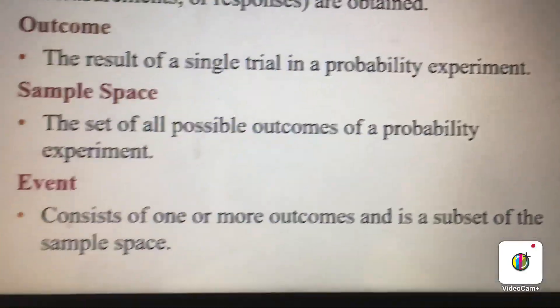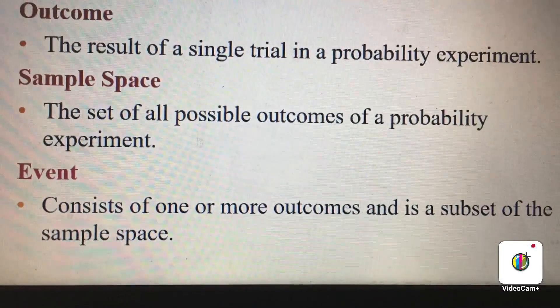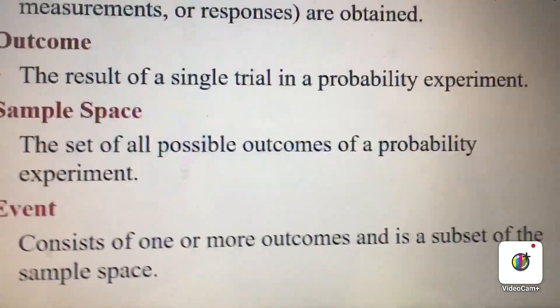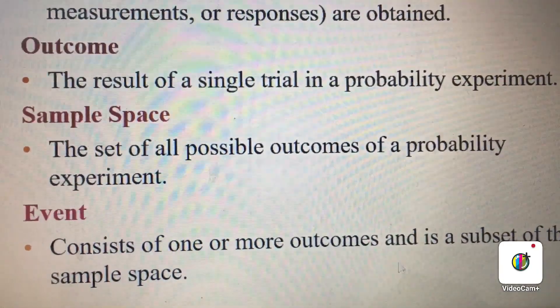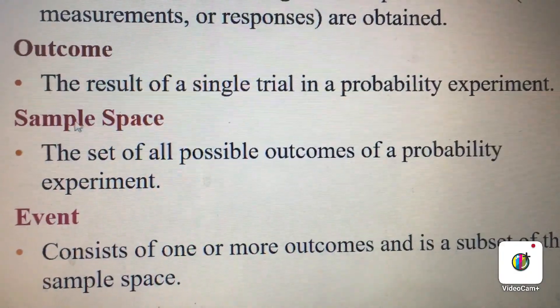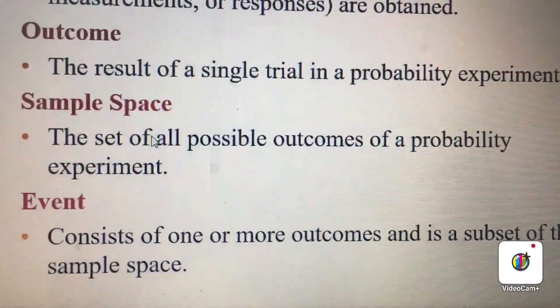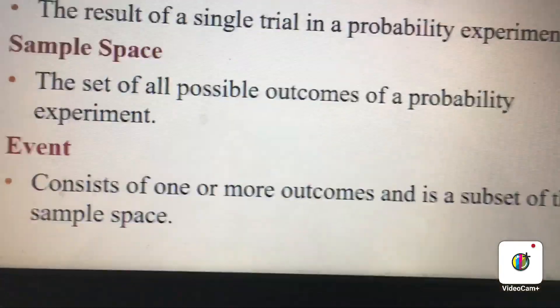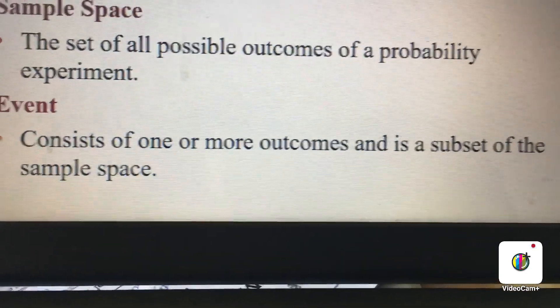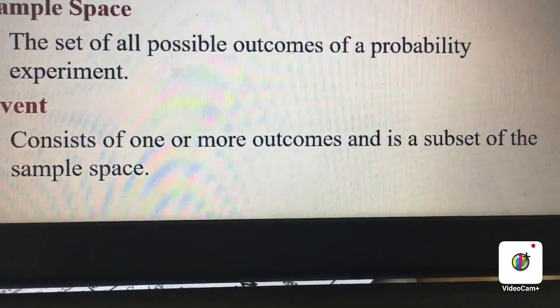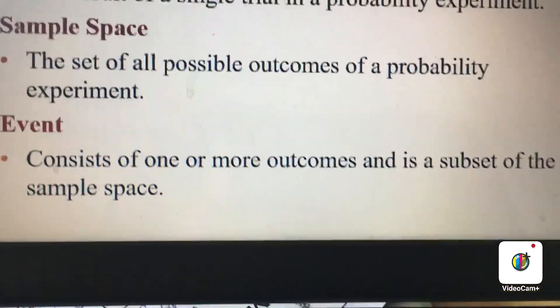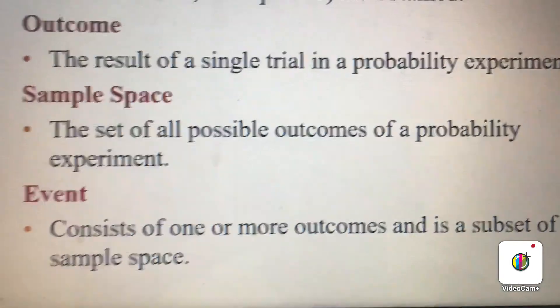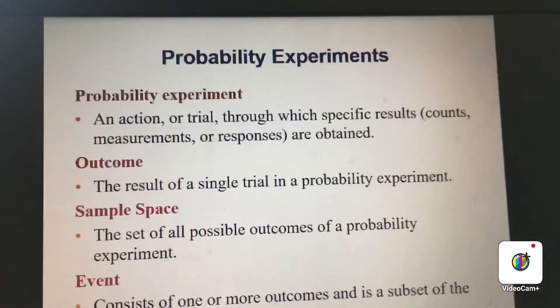The next is the sample space. Sample space is all the possible outcomes of a probability experiment. We call that sample space. I'm going to give you more examples on this in the next slide. Event simply means any set of outcomes. Usually examples will help you to understand this concept.